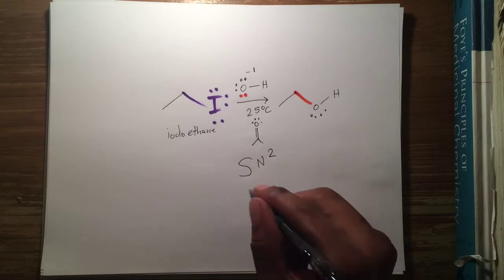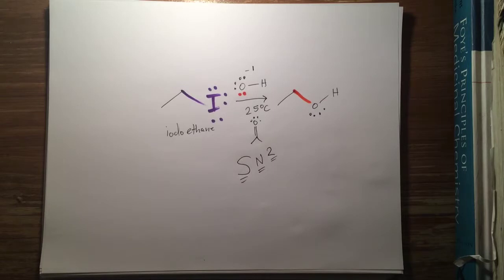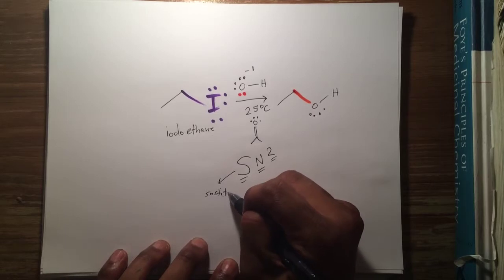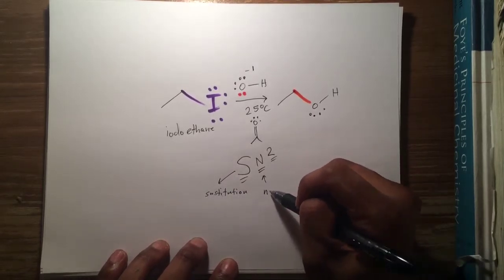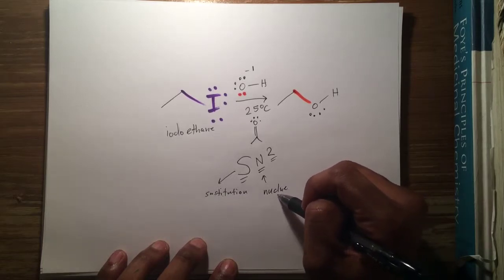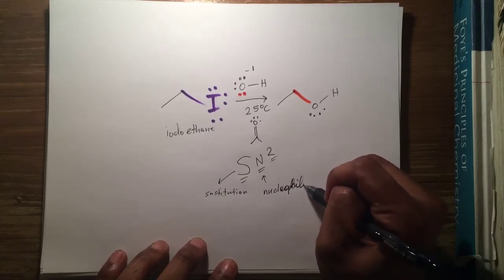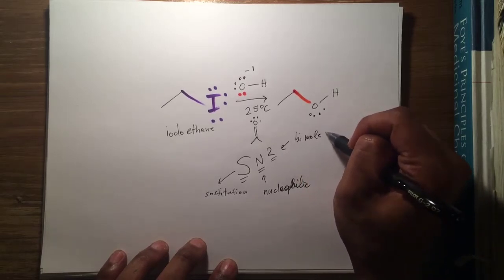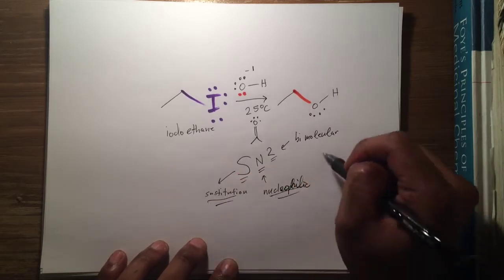So let's talk about what SN2 means. S means substitution, N means nucleophilic, and 2 means bimolecular. So: substitution, nucleophilic, bimolecular.